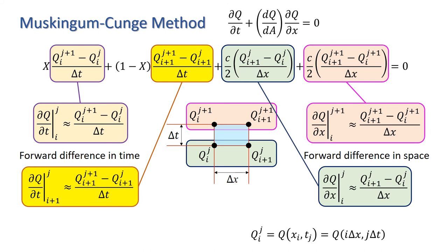In our approximation to the differential equation, we use a weighted average of the finite difference approximations at cell i and i+1 for the time derivative. And for the space derivative, we take the mean of the approximations at time step j and j+1. Note here that c is the celerity of the flood wave, defined as dq by dA evaluated for this cell on the finite difference grid.